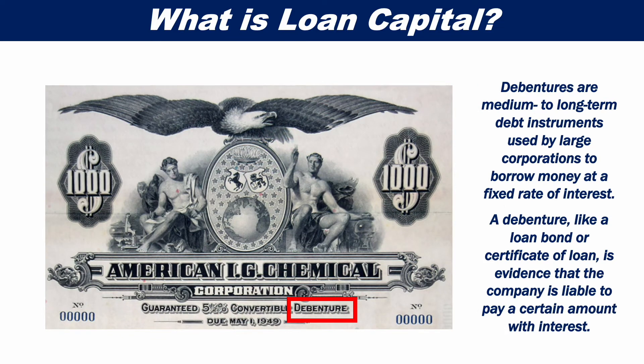Debentures are medium to long-term debt instruments used by large corporations to borrow money at a fixed rate of interest. A debenture, like a loan bond or certificate of loan, is evidence that the company is liable to pay a certain amount with interest.